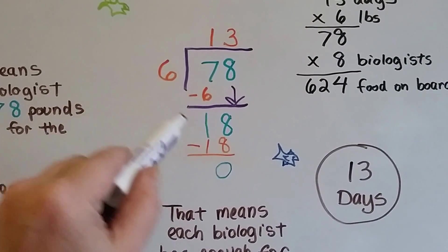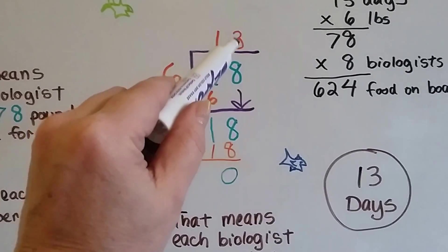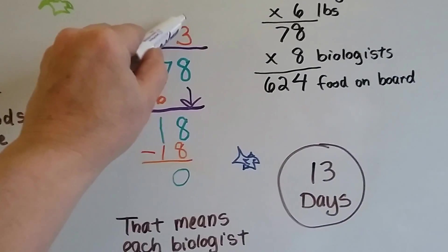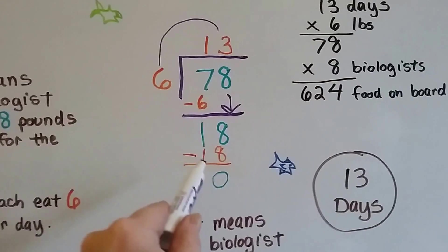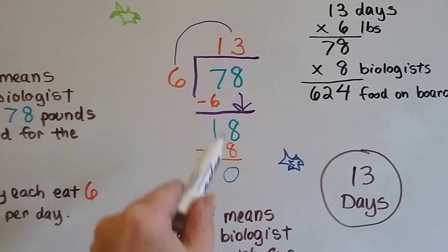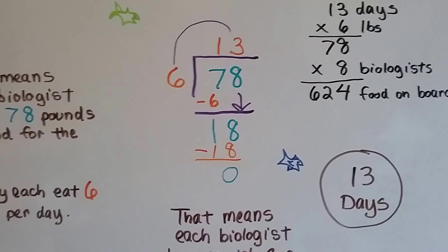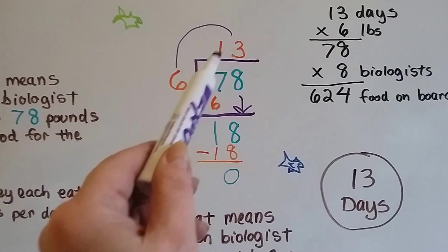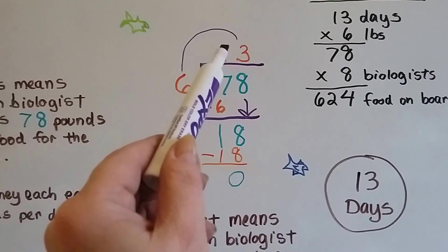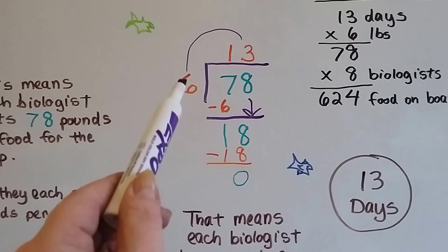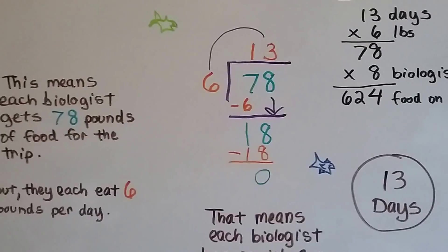And the eight comes down. Six goes into 18. Six times three is 18. And we put our 18 down here. 18 take away 18 is zero. We have a zero remainder. And there'll be 13 packets of six pound food.